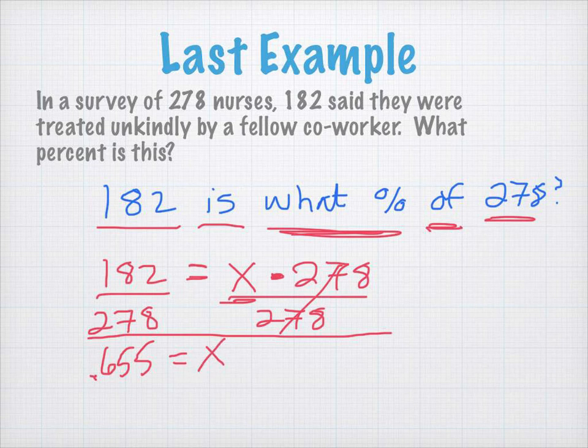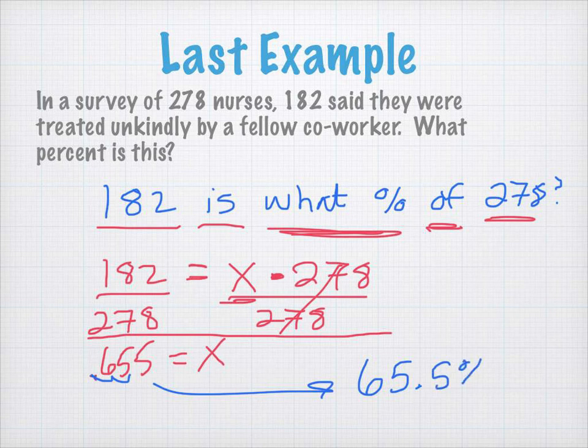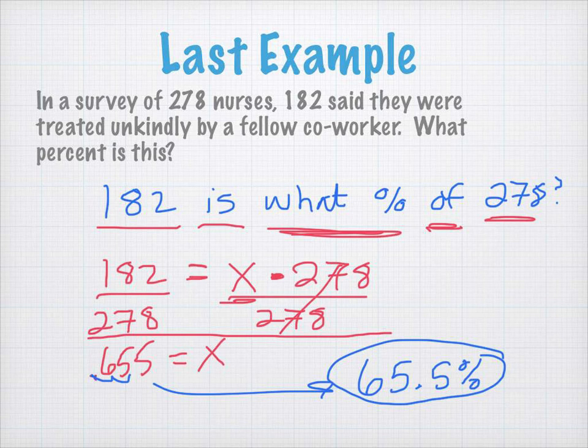Keep in mind here, this is not in a percent form. This is in its decimal form. So, to change this back into a percent, I will move the decimal point two to the right. 65.5 percent. So, approximately 65.5 percent of nurses said that they were treated unkindly.